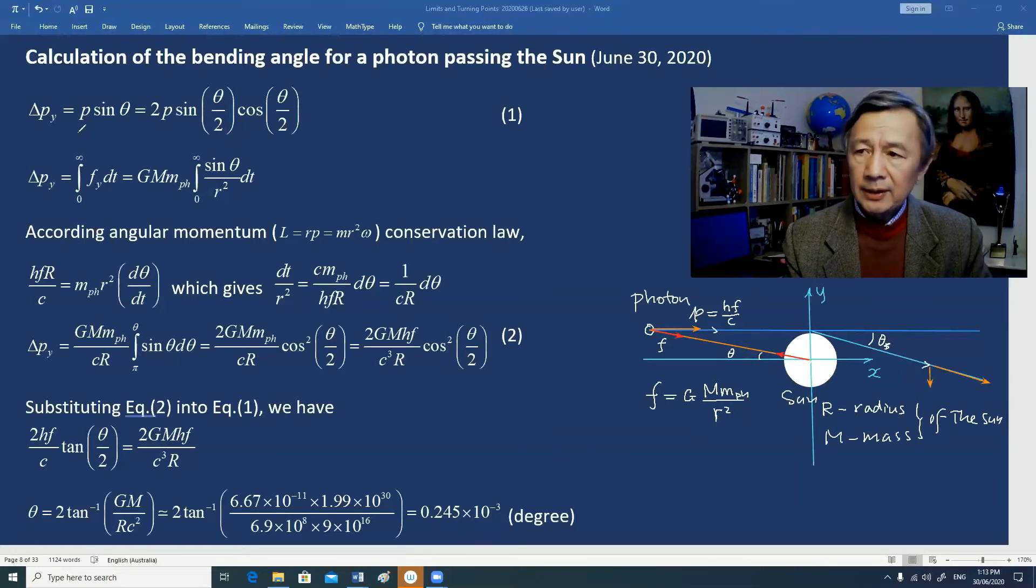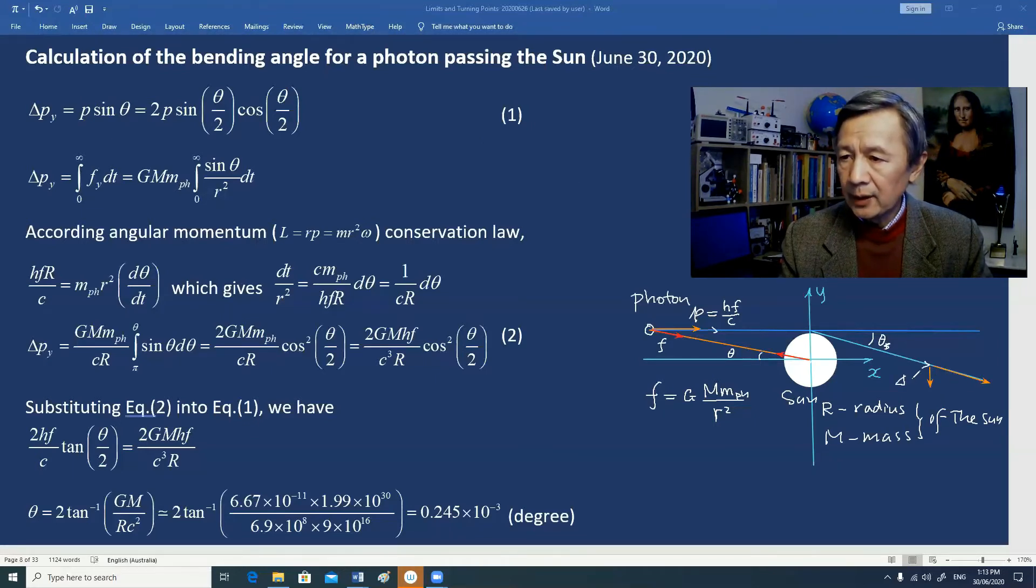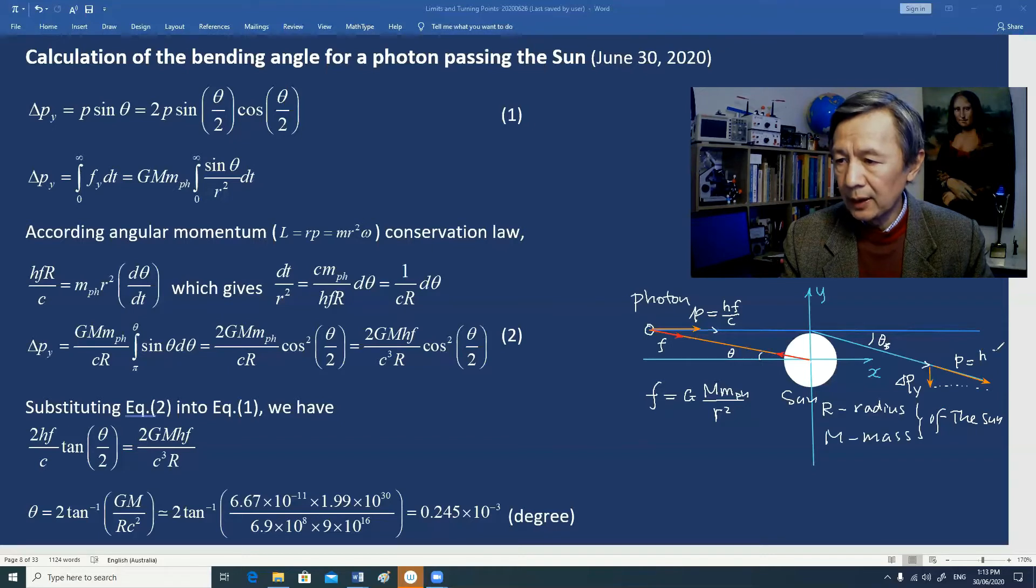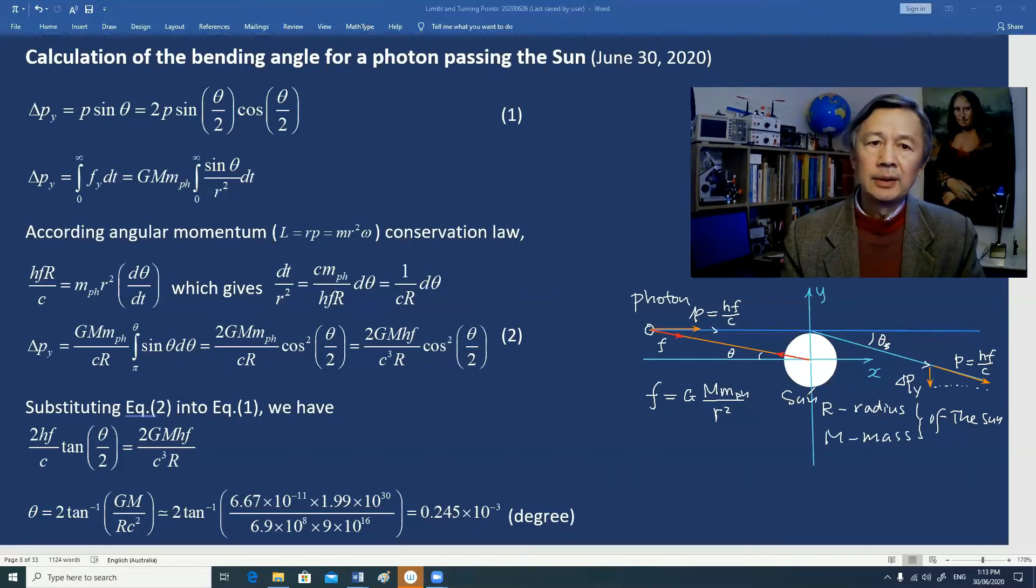The first equation denotes the change in the Y component of photon momentum. We assume that P is almost the same, so hf divided by c.